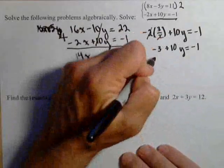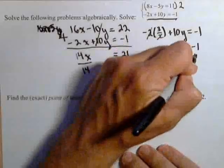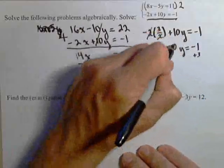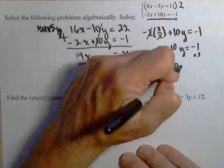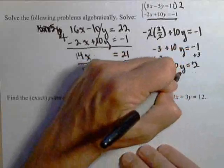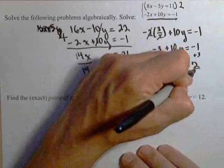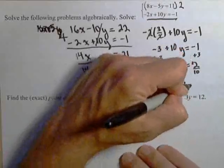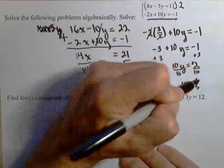So we're going to add three to both sides. So we have 10y equals two. Or when we divide both sides by 10, we get y equals one-fifth.